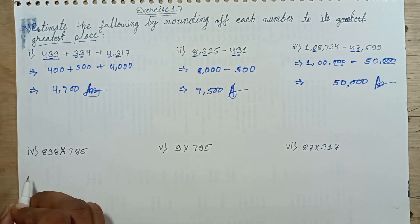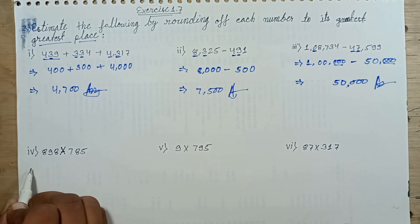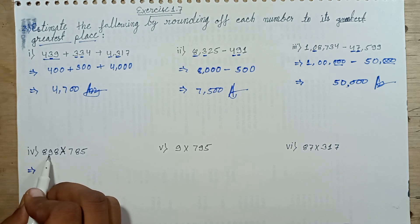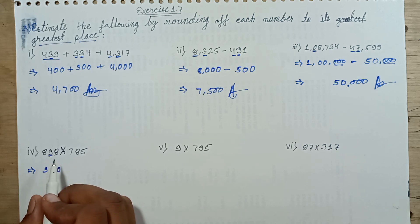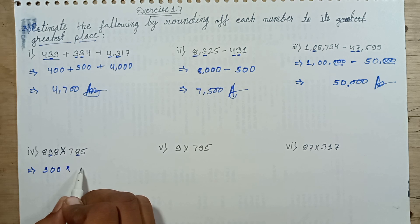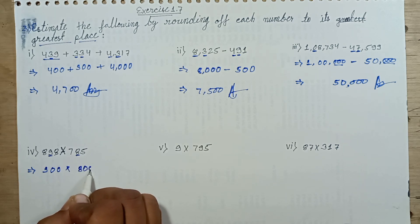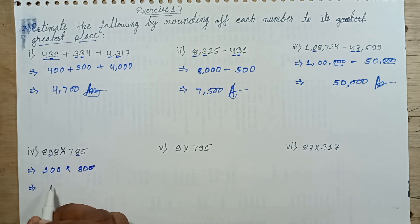Next question, question number 4: 898 and 785. Rounding 898 — tens place digit is 9, which is greater than 5. So 9 is replaced with 0 and the hundreds place digit increases by 1. Hundreds place digit is 8, increasing by 1 gives 9. Replace ones with 0. Now rounding 785 — tens place digit is 8, greater than 5, replaced with 0. Hundreds place digit is 7, increasing by 1 gives 8. Multiplying: 9 times 8 is 72.